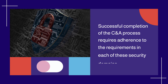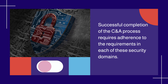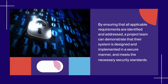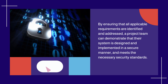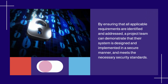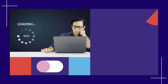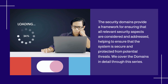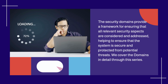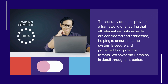Successful completion of the C&A process requires adherence to the requirements in each of these security domains. By ensuring that all applicable requirements are identified and addressed, a project team can demonstrate that their system is designed and implemented in a secure manner and meets the necessary security standards. The security domains provide a framework for ensuring that all relevant security aspects are considered and addressed, helping to ensure that the system is secure and protected from potential threats.